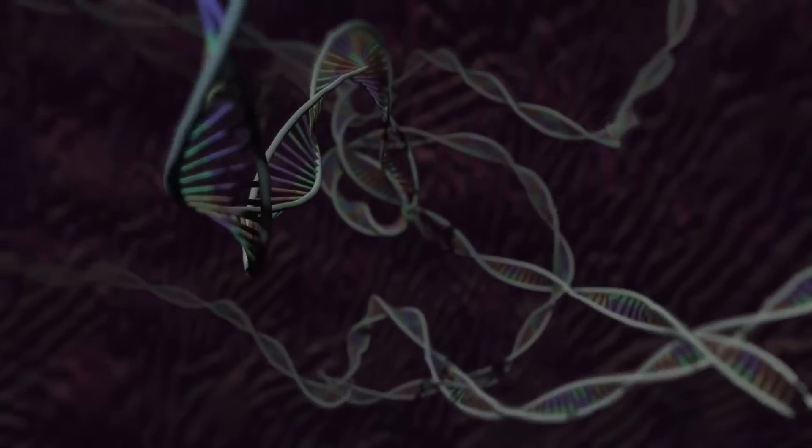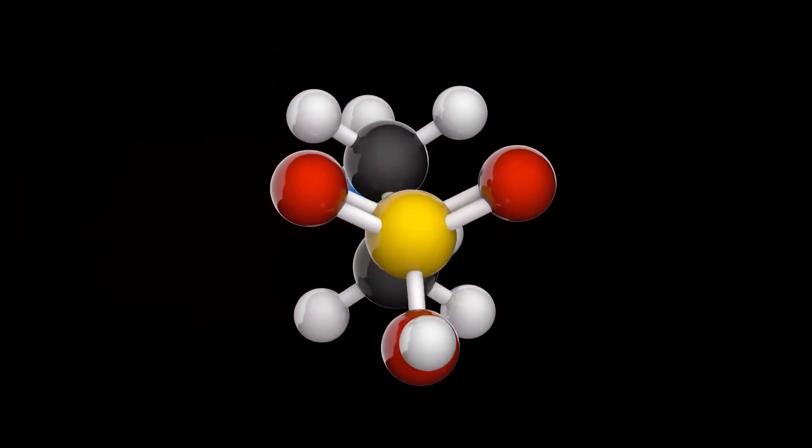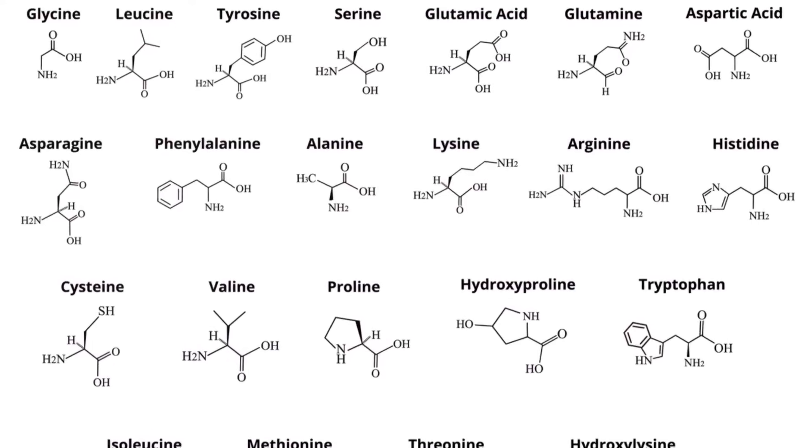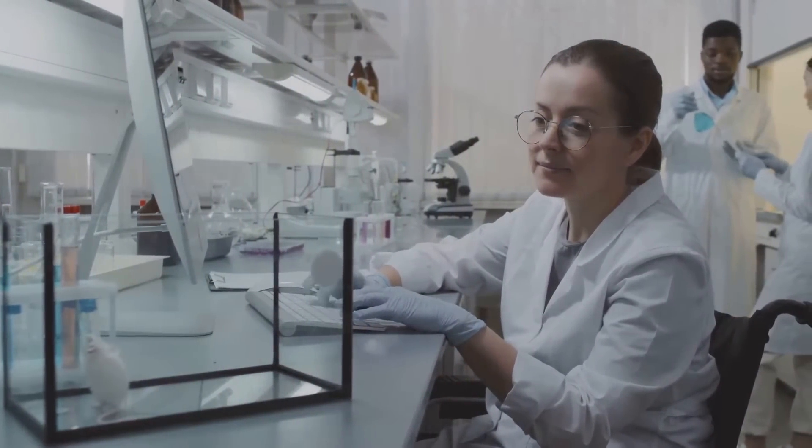The RNA message is read in groups of three bases called codons. Each codon codes for a specific amino acid. There are 20 different amino acids, which can be combined in countless ways to create a vast array of proteins.